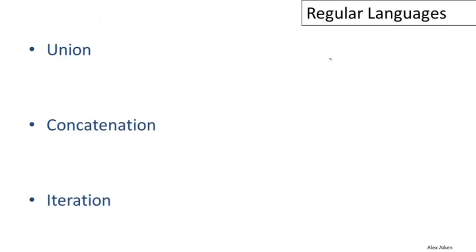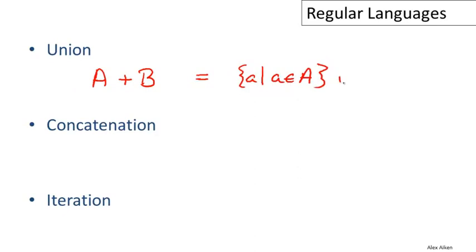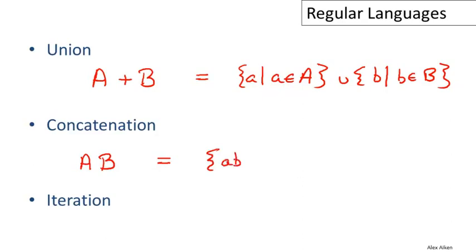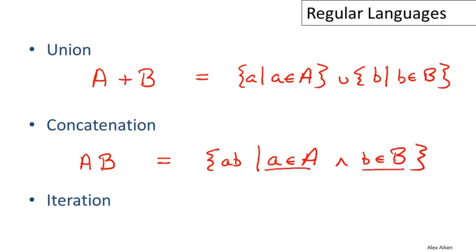Besides the two base regular expressions, there are three compound regular expressions. The first is A plus B, which corresponds to the union of the languages A and B — just the union of the two sets of strings. Concatenation is like string concatenation: if I have two regular expressions A and B, then the concatenation of A and B is equal to all strings — little a concatenated with little b — where a is drawn from language A and b is drawn from language B. This is a cross product operation.